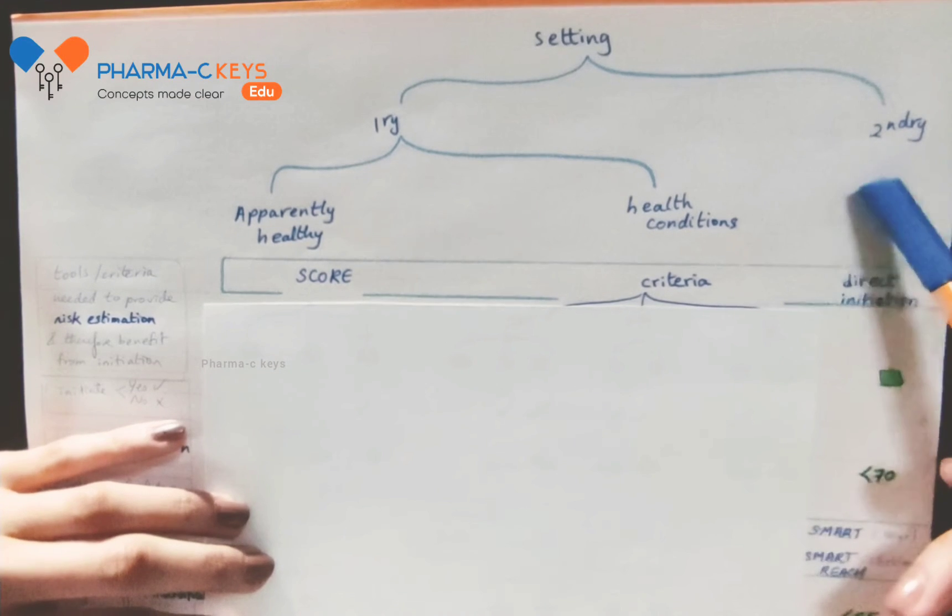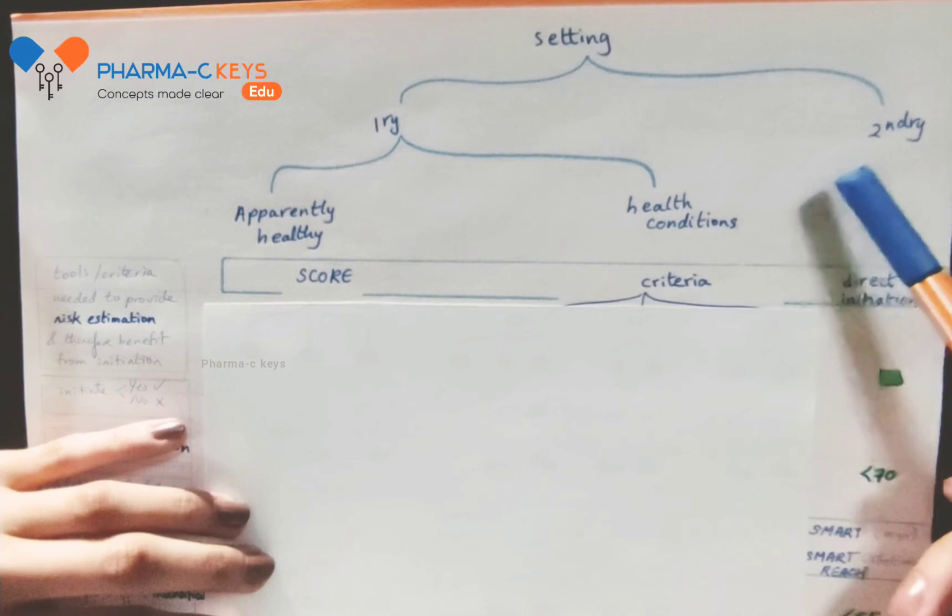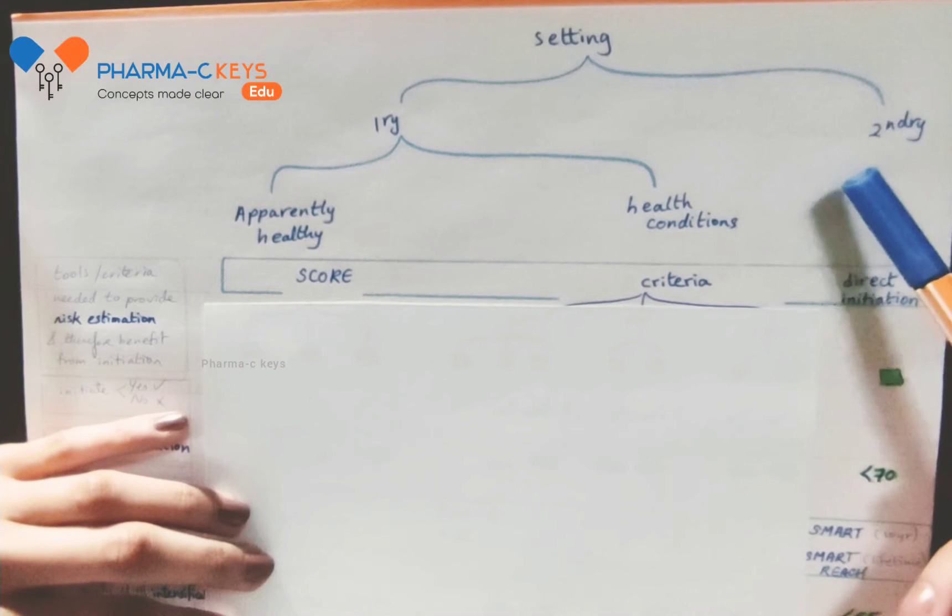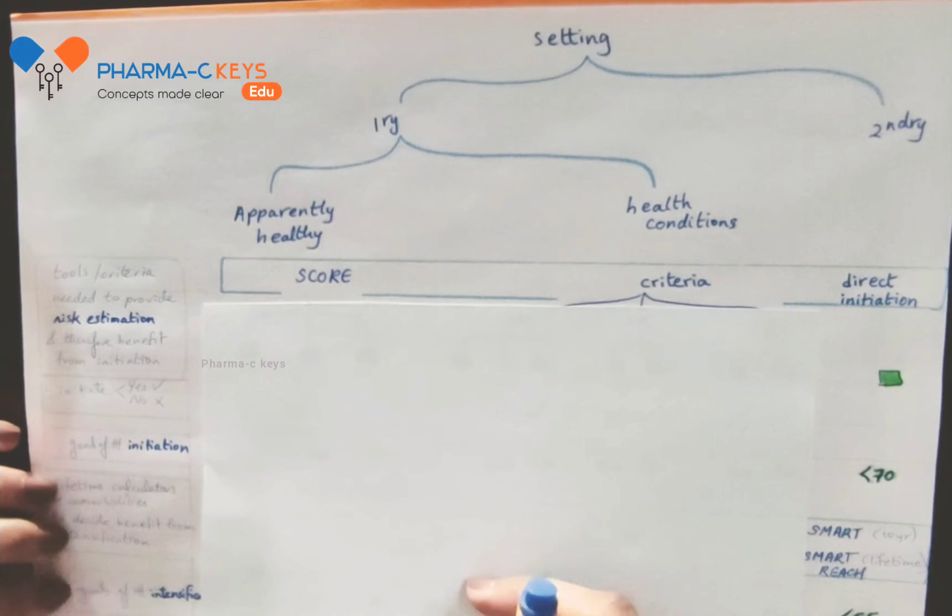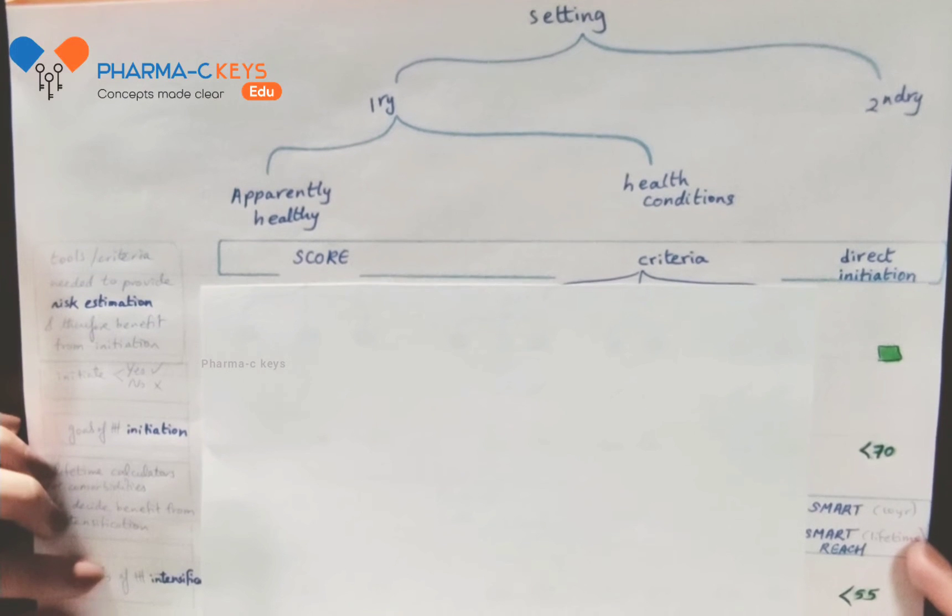Secondary prevention setting means patients with established atherosclerotic cardiovascular disease. These patients are already at a very high risk of cardiovascular disease recurrence. And therefore, risk factor treatment is aimed to achieve very low LDL goals in both step one and step two.